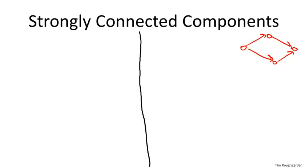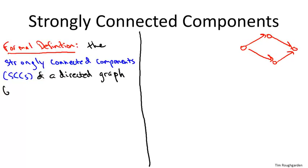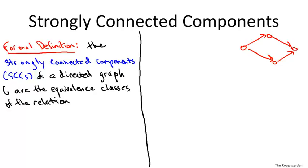For the record, let me give a formal definition, although this intuition is perfectly valid — just regions where you can get from anywhere to anywhere else. We say that the strongly connected components of a directed graph, or SCCs for short, are the equivalence classes of a particular equivalence relation. The equivalence relation is on nodes of the graph: we say that U is related to V if you can get from U to V via a directed path, and also from V to U via some other directed path.